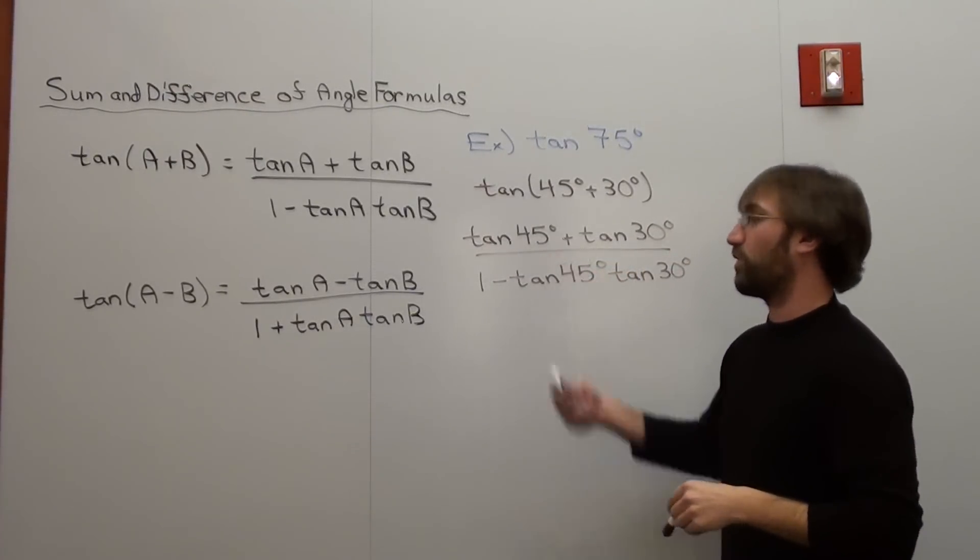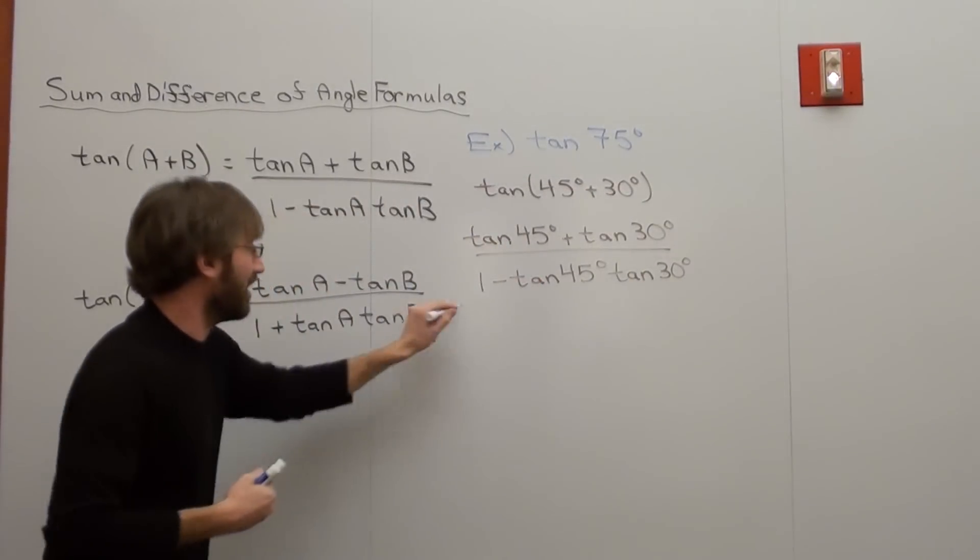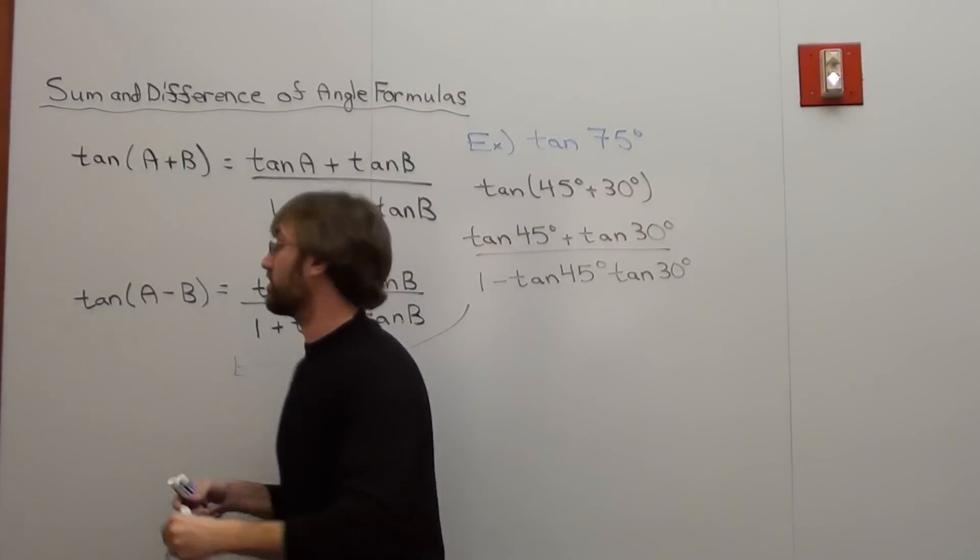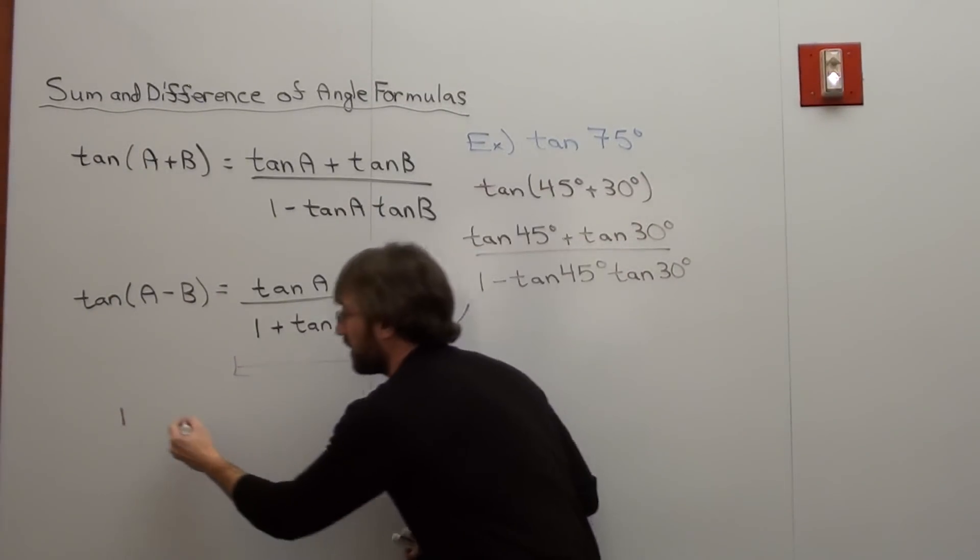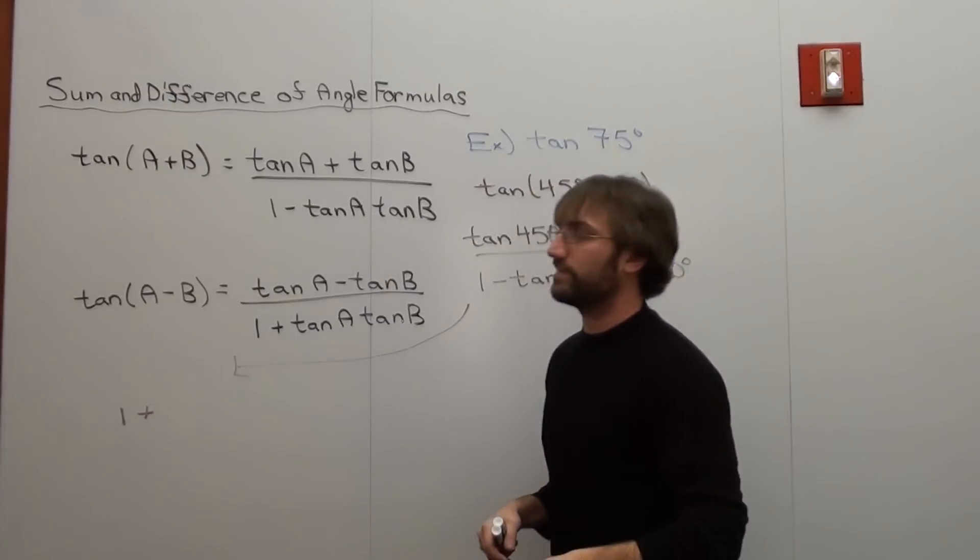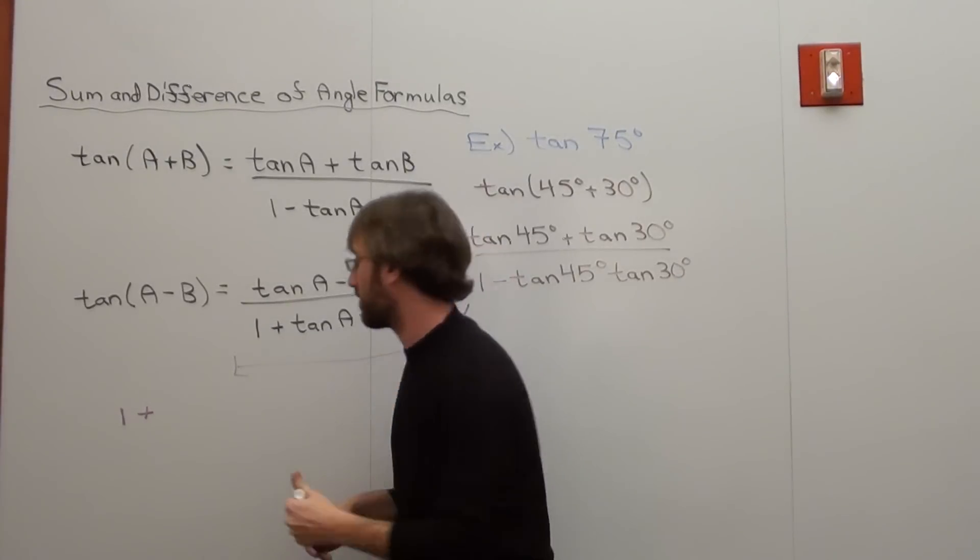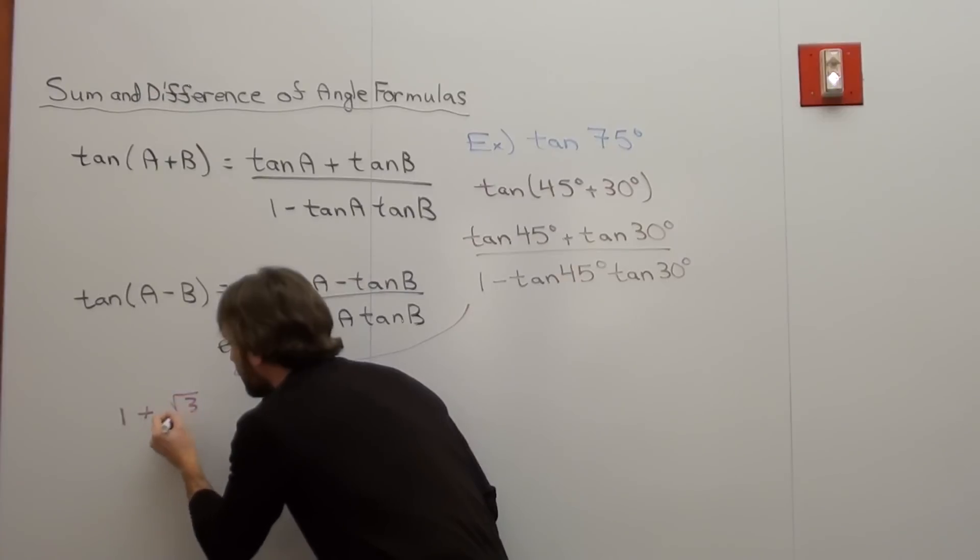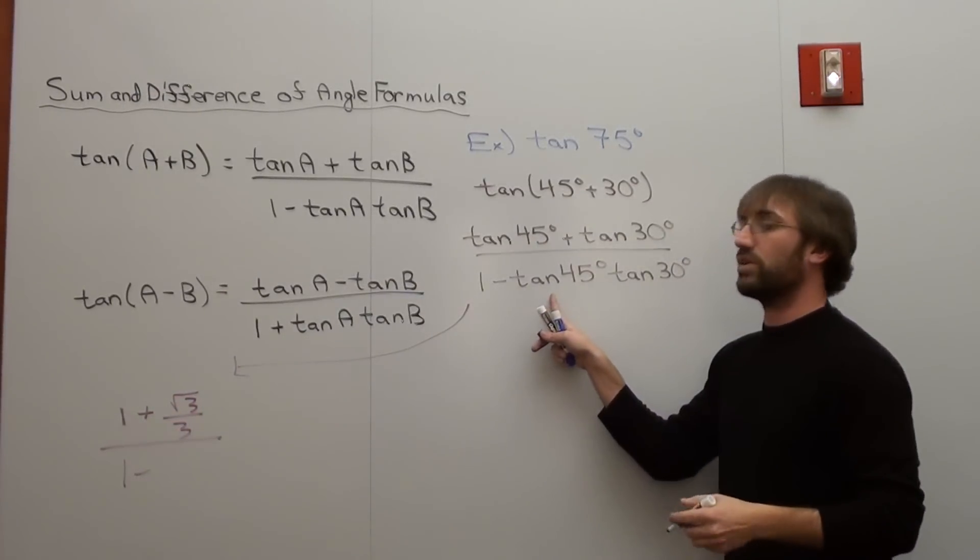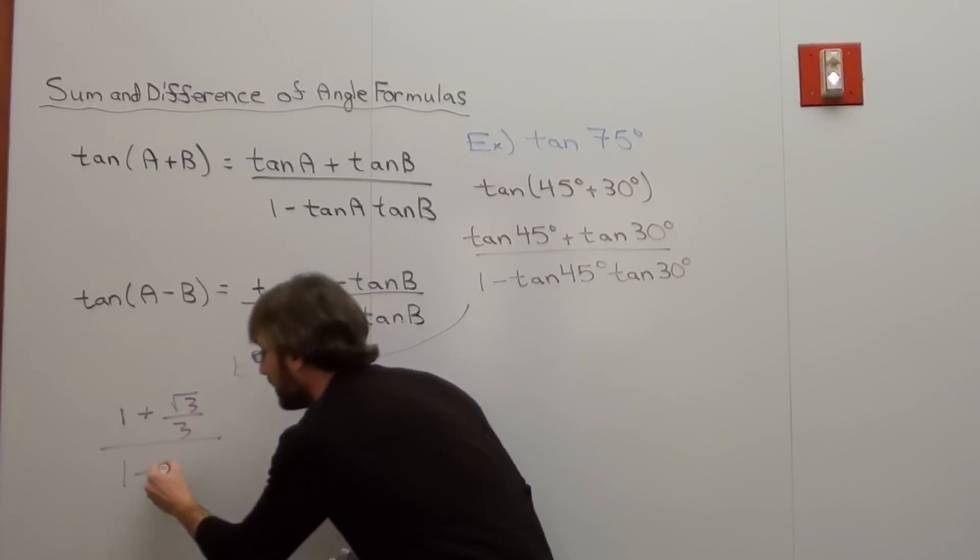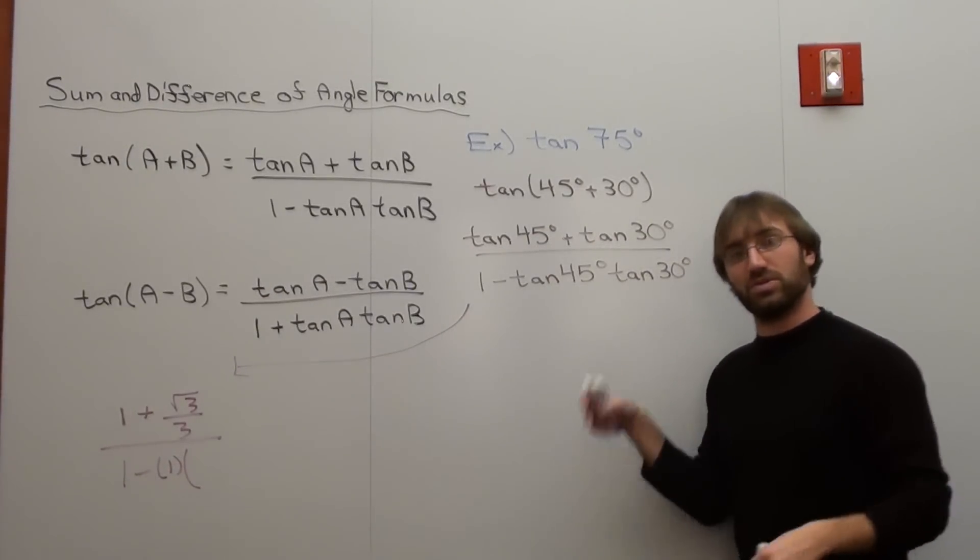Okay. Tangent of 45, I've memorized easily, and that's just 1. So I'm going to move this over here. The tangent of 45 is 1, plus the tangent of 30, which is √3 over 3. And it's all over 1 subtracted by the tangent of 45, which is 1, times the tangent of 30, which is √3 over 3.